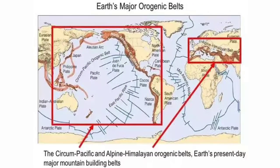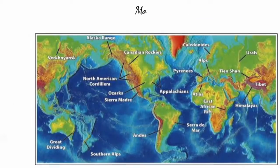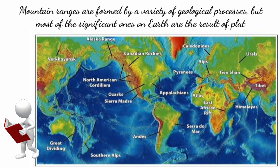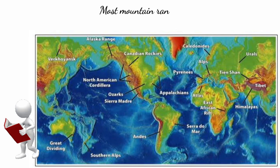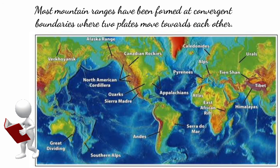The Earth's major orogenic belts are the Circumpacific and the Alpine-Himalayan orogenic belts — these are the major mountain-building belts in the world. Mountain ranges are formed by a variety of geological processes, but most of the significant ones on Earth are the result of plate tectonics. Most mountain ranges have been formed at convergent boundaries where two plates move towards each other.